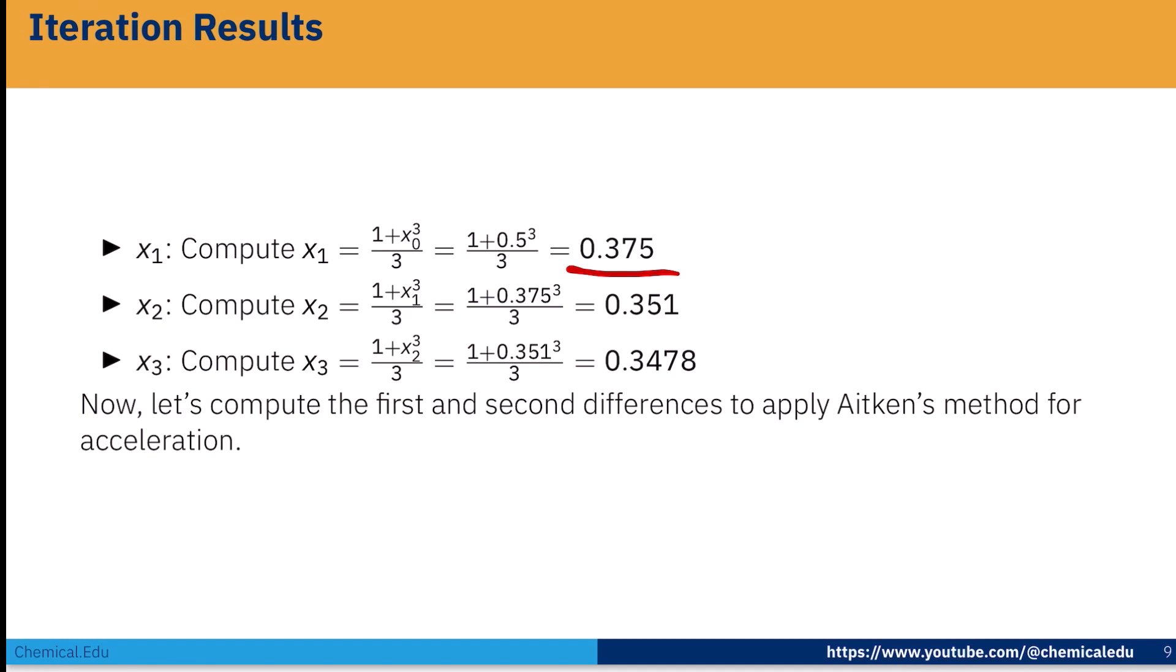Now compute x_2. x_2 = (1 + x_1³)/3, that is 0.351. Compute x_3, that is 0.3478. So now we got those three consecutive points x_1, x_2, x_3. Now we can find out the first and second difference.